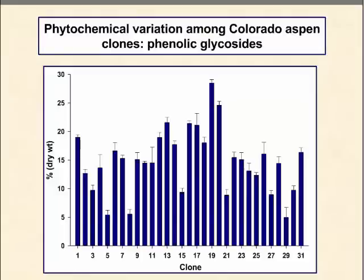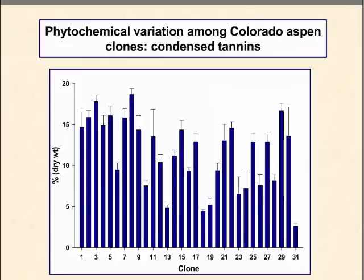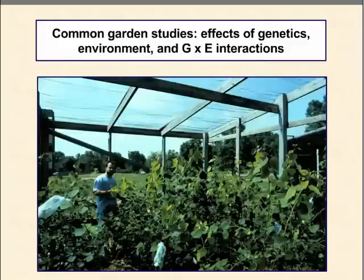This slide shows variation in levels of phenolic glycosides among 31 randomly selected Aspen clones in northwest Colorado. The main point is that there's extraordinary genotypic or clonal variation — those Aspen clones vary in concentrations of phenolic glycosides anywhere from 5 up to 30 percent. Similarly, condensed tannins are also highly variable among Aspen clones, ranging from roughly 5 up to close to 20 percent of foliar dry weight.